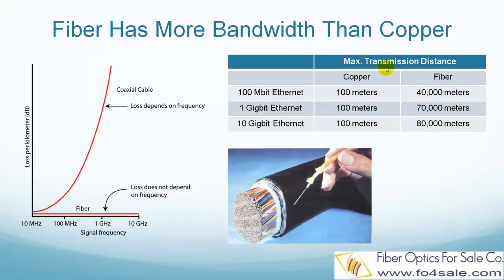This table lists the most common high-speed Ethernet standards. For 100 megabit per second, copper supports up to 100 meters, while fiber supports up to 40 kilometers. For gigabit Ethernet, copper supports still 100 meters, and fiber supports 70 kilometers.